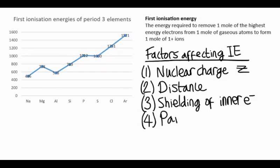And the fourth factor is pairing. When we put two electrons into the same orbital, they're both negatively charged. They repel each other a little, and that can make it easier to remove one of the electrons.